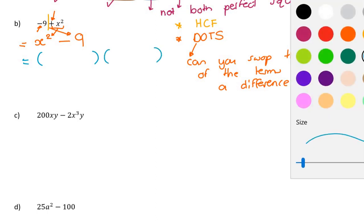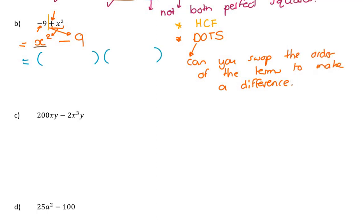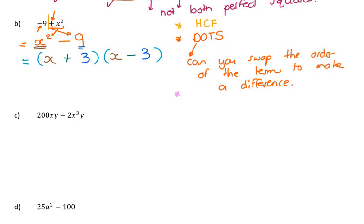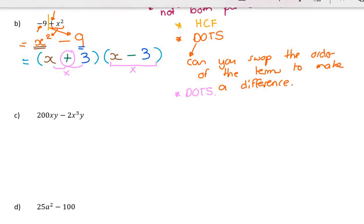Now it is a DOTS: a bracket times a bracket. What times itself gives x squared? x times x. What times itself gives nine? Three and three. One's a plus and one's a minus. Now, is there another DOTS? The first bracket with the plus sign cannot be a DOTS. The second bracket has a minus sign and two terms, but neither term is a perfect square — so it's also not a DOTS.